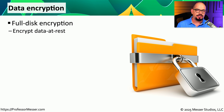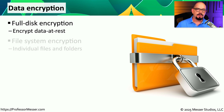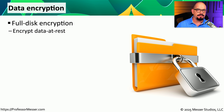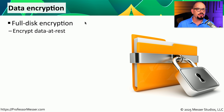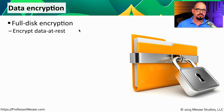A good way to protect data is to encrypt this information so that only you or people you trust are able to view it. If you're encrypting an entire drive, you're performing a full disk encryption, sometimes referred to as FDE. If you're running Windows, you would use BitLocker to provide full disk encryption. This is often referred to as data at rest, because it encrypts all of the data stored on your storage drive.